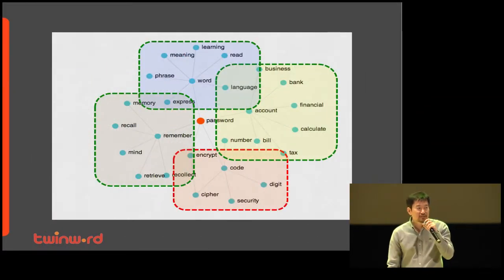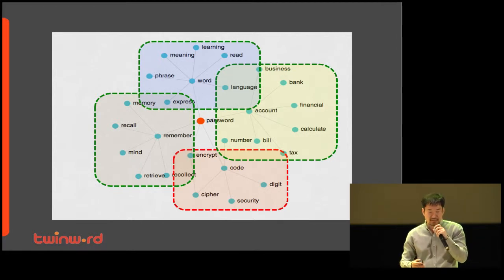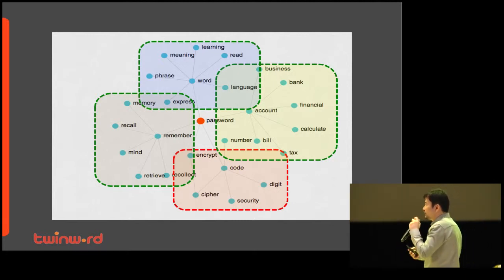Word graph is a network of words. As you can see, the word password is related to many other words. We also know that the word password is related to many topics such as computer, finance, language, and memorization. If we have a good word graph, computers can understand the topic of web content.